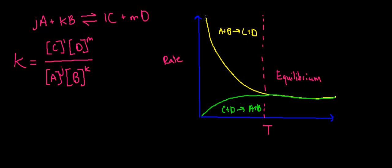In the beginning, I have a lot of reactant. So the rate at which C and D are being created is very high. And in the beginning, there is no C and D. So it's at zero. So the rate is at zero.